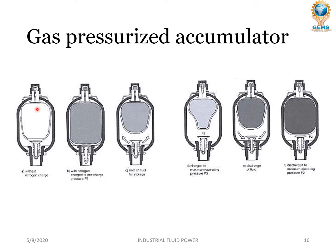Initially the accumulator is empty and the bladder is fully expanded with gas — here it is filled with a nitrogen charge. When pressurized fluid enters, it compresses the bladder. The bladder compresses to the maximum extent it can. When pressure is needed and low pressure is created on the system side, the pressurized fluid comes out, and the bladder expands from its compressed state back to its decompressed stage. The pressure fluid then goes and compresses the bladder again on the next charging cycle.